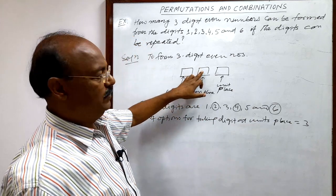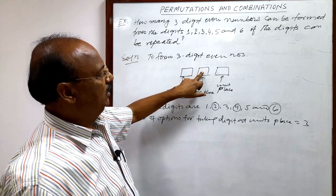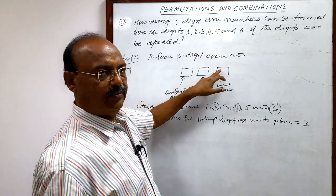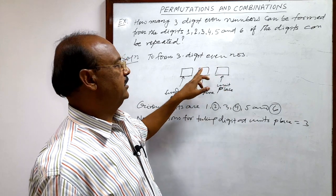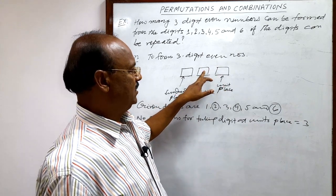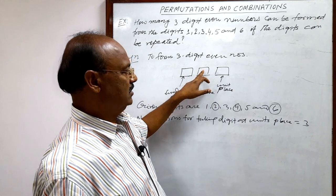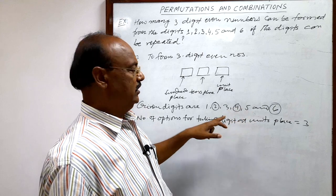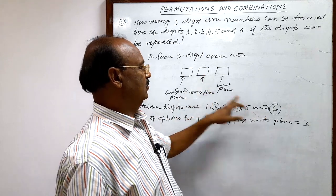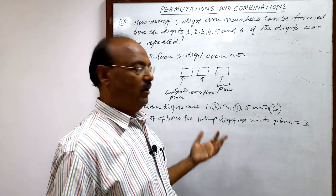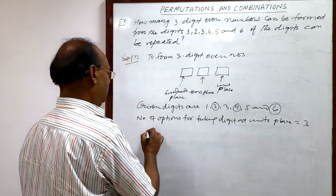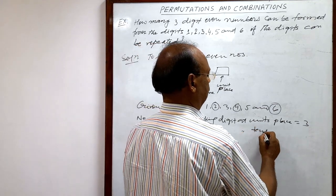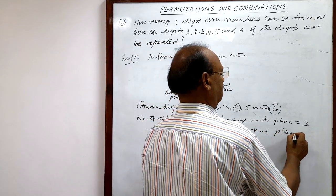Now let us consider this place, tens place. You see the condition, digits can be repeated. So if any digit has been selected for this one, can also be selected for tens place. So total number of options for selecting digits for this tens place, how many? All can be, anyone out of this six can be selected. So 1, 2, 3, 4, 5, 6. So this can be filled up with any one of this six. So there are six options. Number of options for taking digit at tens place, six.